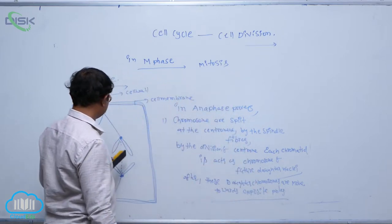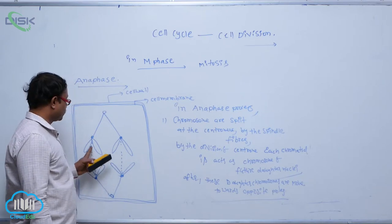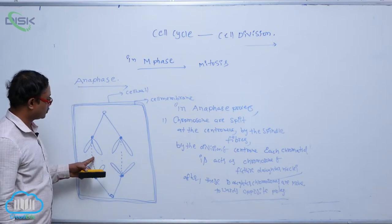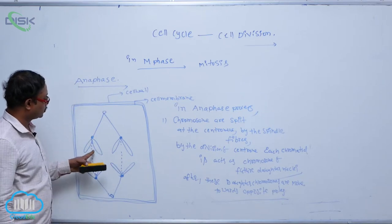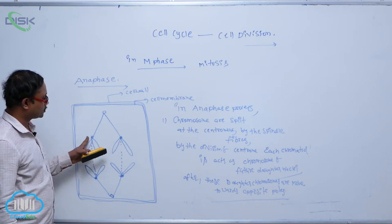When the division of the centromere occurs, the daughter chromosomes move towards the opposite poles by the spindle fibers.